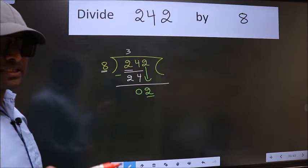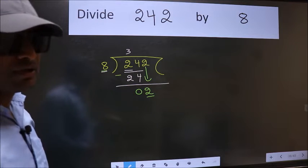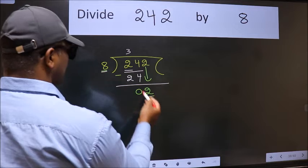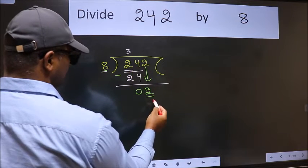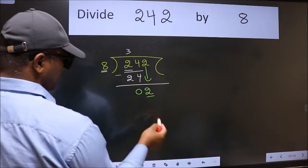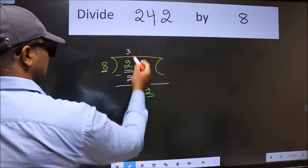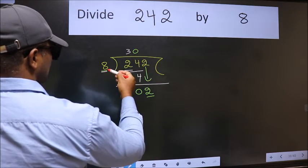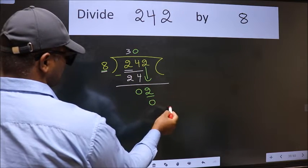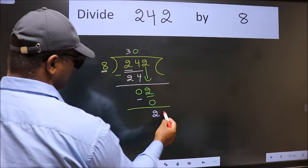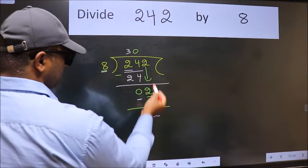Instead of that, what you should think of doing is: which number should we take here? If I take 1, we will get 8, but 8 is larger than 2. So what we do is we take 0, so 8 into 0 is 0. Now we subtract, we get 2 over here.